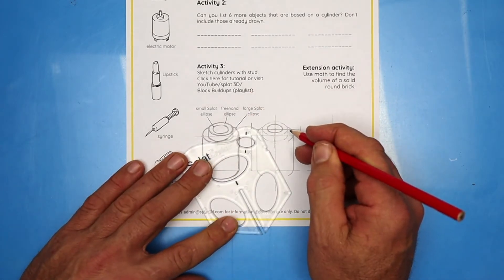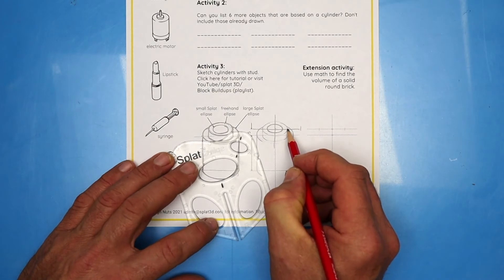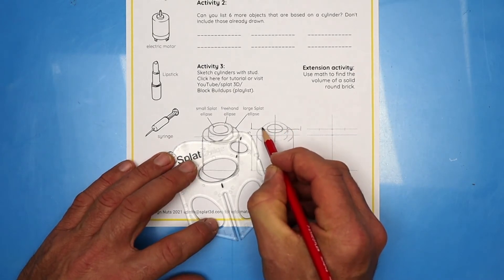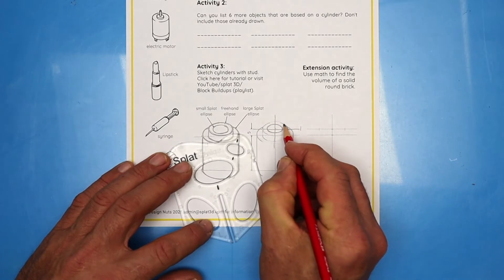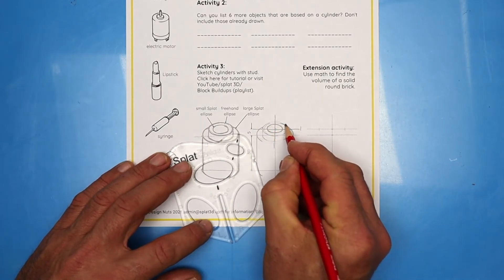Now for the slightly larger one. First, mark off how wide you want your ellipse. We're going to copy the shape of the small one, only a little bit bigger. Start off with some light sketchy lines, then draw in your ellipse.